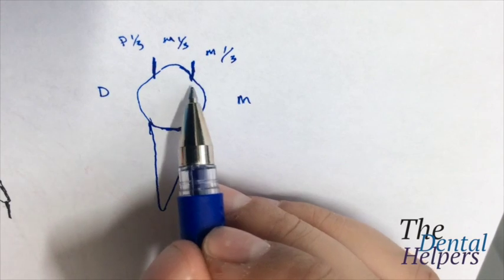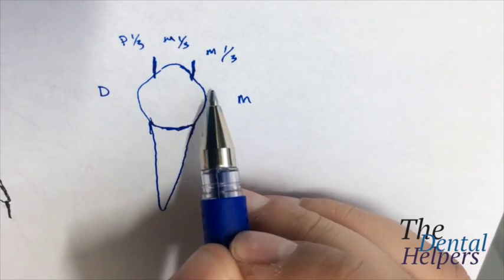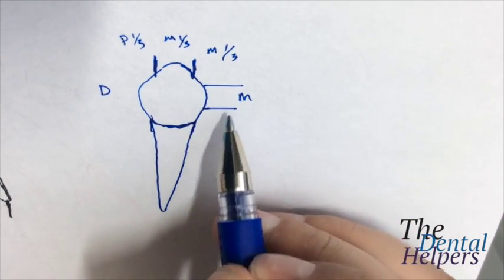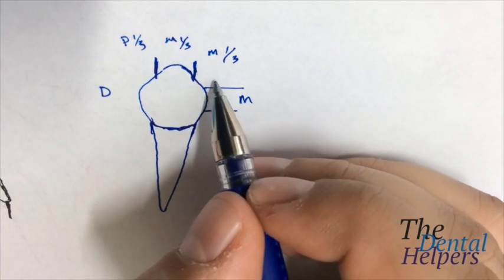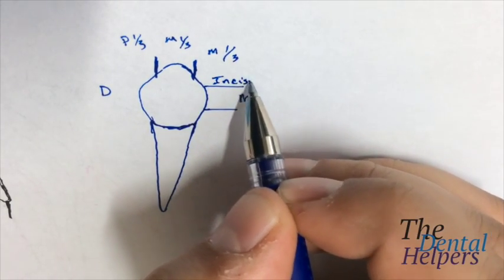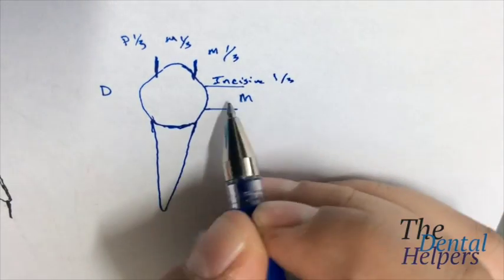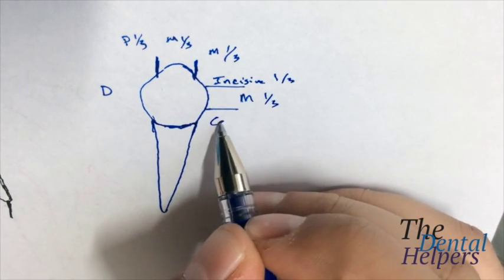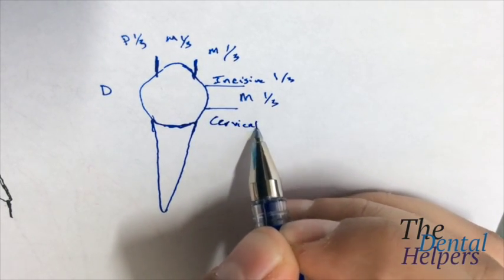And then if we look at it from this way, there are also thirds. There is the incisal third, the middle third, and guess it, the cervical third.